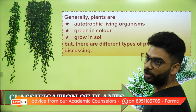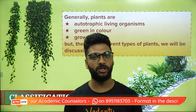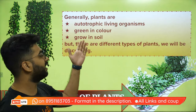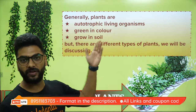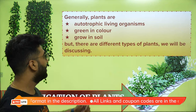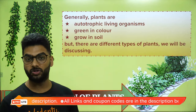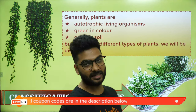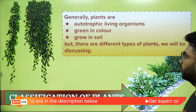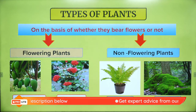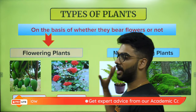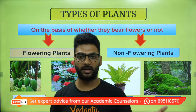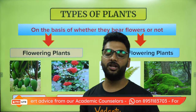Generally, all plants are autotrophic in nature. They prepare their own food by the process of photosynthesis, and if they have chlorophyll they will be green in colour. They grow in the soil; some also grow in water. Plants can be classified as flowering plants and non-flowering plants, and as gymnosperms and angiosperms. That is how you classify or differentiate plants.